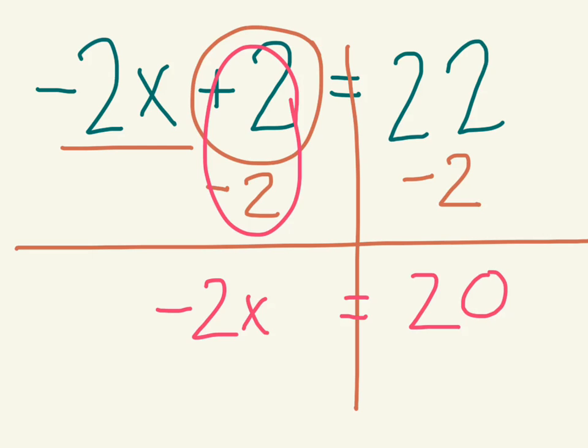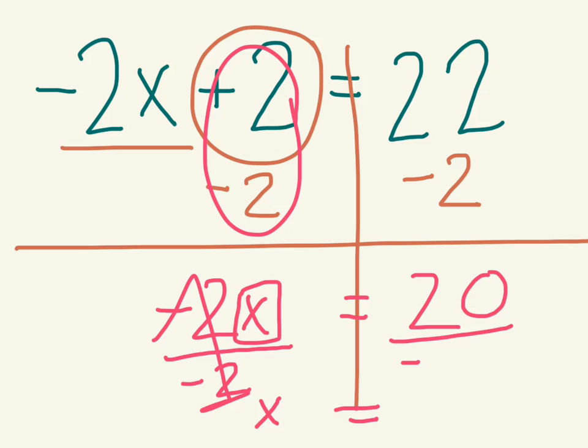Now, negative 2 times what gives me 20? I can either do it in my head and think, what do I multiply negative 2 by to get 20? Or I can divide by how many teams I need. I need two teams. I'm going to divide by that negative 2 so that the negative 2s cancel out. And then I have x by itself. So I divide to make the bottom and top cancel out so that I get x. And I need to do that to both sides. I always have to do the same thing to both sides.